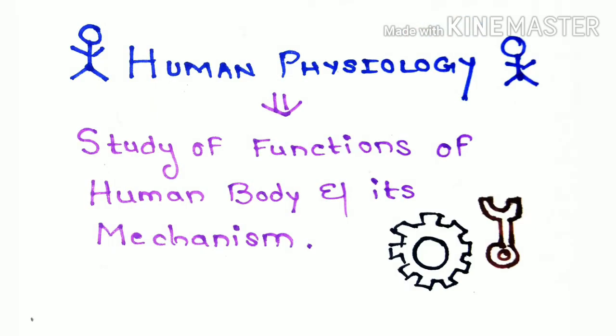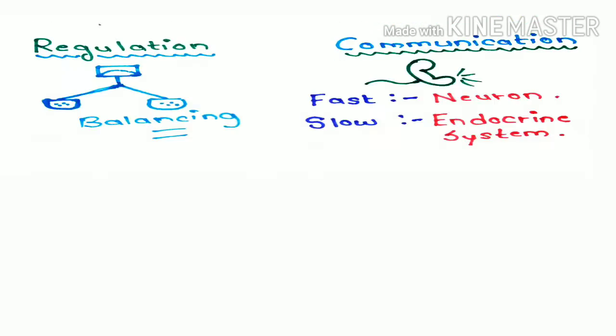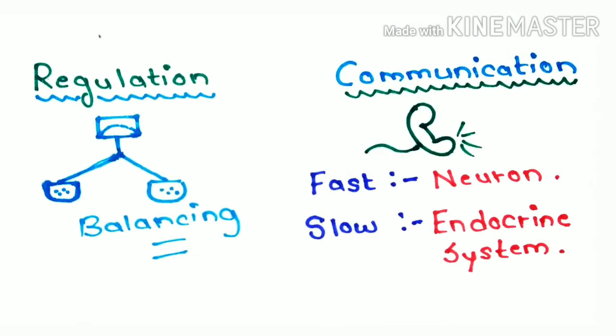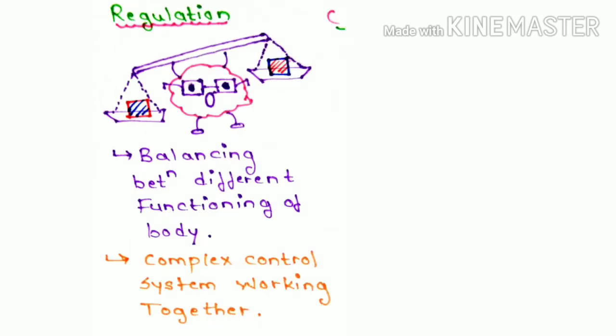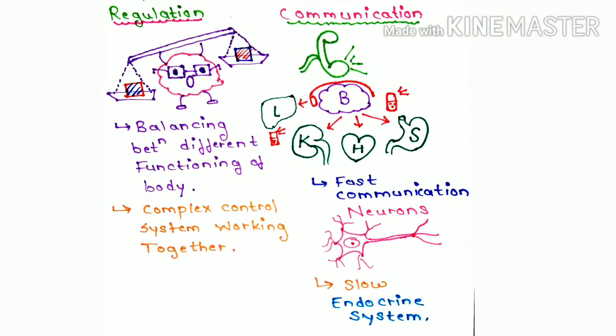Human Physiology explains the function and mechanism of human body that makes us living beings. Human Physiology works on the basis of regulation and communication. The fact that we are alive is a result of complex control systems working together, and through communication, various systems of body communicate with each other.